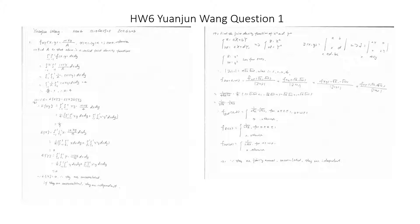So we get the integral from negative one to one of the integral from negative one to one of (1 + xy)/a dx dy, which equals the integral from negative one to one of (1/a) times the integral from negative one to one of (1 + xy) dx dy. This equals one, so four over a equals one, which means a equals four.